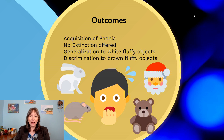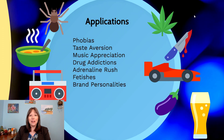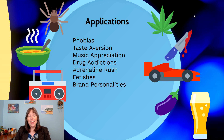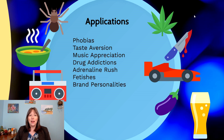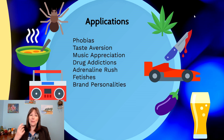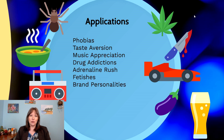The last thing I want to talk about with regards to classical conditioning is how many real-world examples and applications there are. Although classical conditioning is the earlier type of conditioning that psychology studied, it is very pervasive. Phobias can be largely explained through classical conditioning — the idea that something you have a fear response to was previously paired with something very upsetting, and now you continue to have that large fear response.